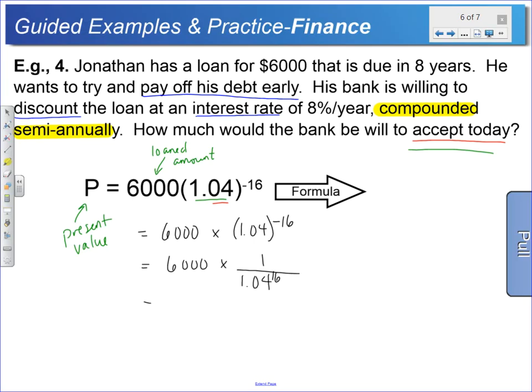What that means is we can bring that back into the original form. Multiplying fractions, it's really six thousand over one, top times top and bottom times bottom. That just moves the 1.04 to the denominator. The use of the negative exponent is beneficial in applying it to a financial problem.